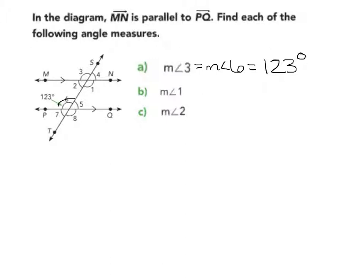Next, let's look at part B. I'm looking for the measure of angle 1. I know that I have 123 degrees for this, and my vertical angles are congruent. So the measure of angle 3 has to be congruent to the measure of angle 1. The measure of angle 1 is 123 degrees.